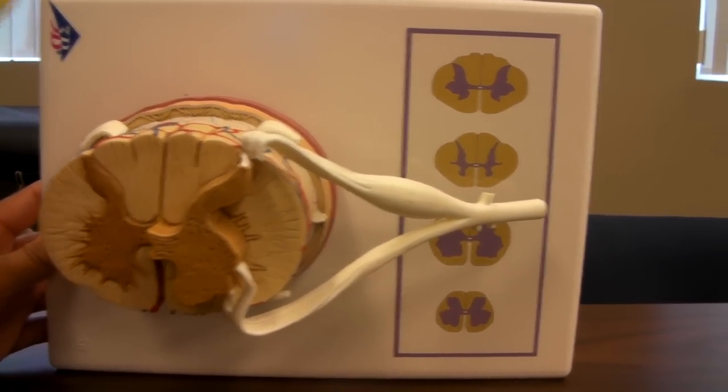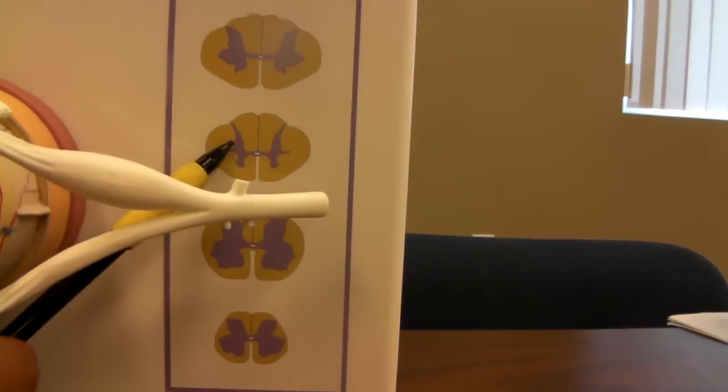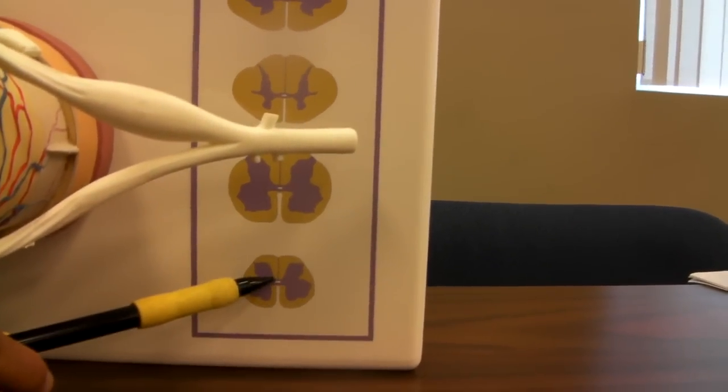So right here we have the spinal cord model, and this is the cervical enlargement, thoracic enlargement, lumbar enlargement, sacral enlargement.